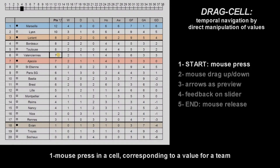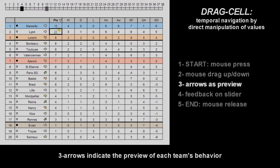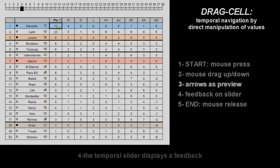We introduced two new interactive techniques to enhance temporal navigation in ranking tables. DragCell is a direct manipulation technique to browse time by interacting in the value domain instead of the time domain. The user mouse clicks a cell corresponding to a team's dimension, and by dragging the mouse up and down, she explores the value domain of the cell. Arrows indicate a preview of each team's behavior if the mouse were to be released, and a temporal slider displays feedback.